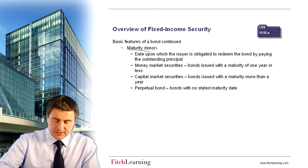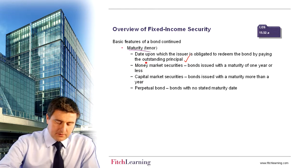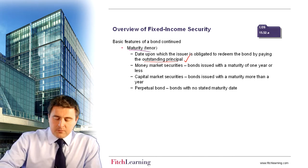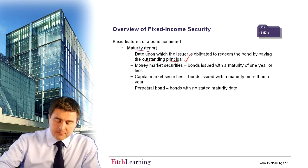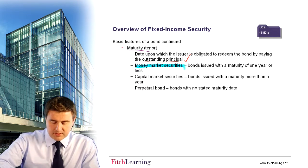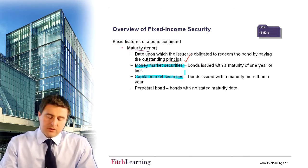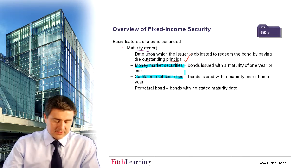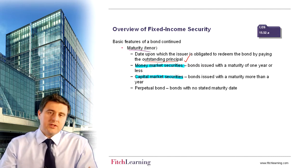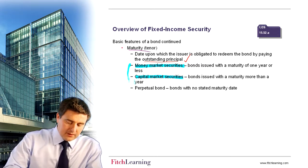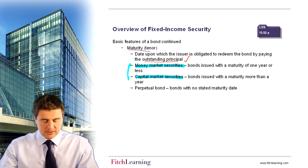The maturity represents the date upon which the issuer is obligated to redeem the bond, done by paying the outstanding principal or the nominal value. When the bond is issued, it will have a lifespan. Upon issuance, that lifespan could be less than one year or more than one year. We coin the term money market instruments for bonds issued with a maturity of one year or less. Capital market instruments would be bonds issued with a maturity of greater than one year — for example, US Treasury bonds. US Treasury bills, or T-bills, are issued with a lifespan of less than one year.